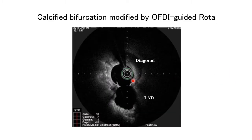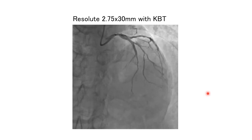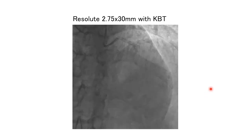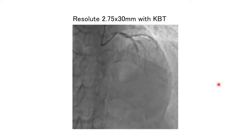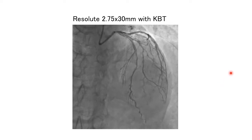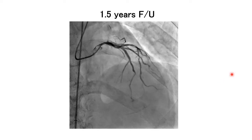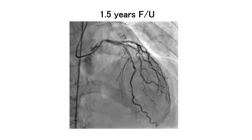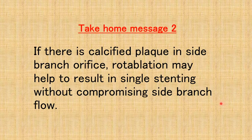OCT shows that the orifice of the diagonal branch still has calcium, but lumen gain looks okay. We implanted a Resolute stent 2.75x30 into the LAD and finished with KBT. At 1.5 years follow-up, no restenosis was observed. Rotablation may help achieve single stenting without compromising side branch flow.